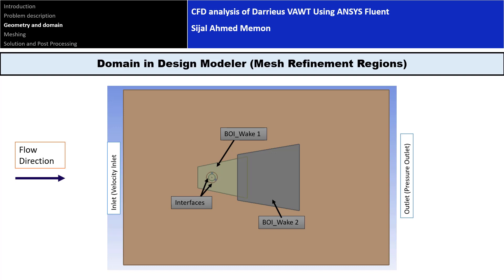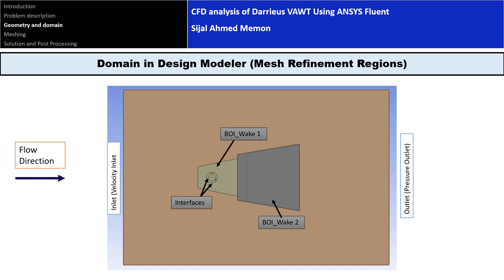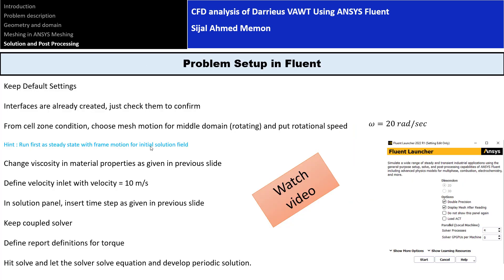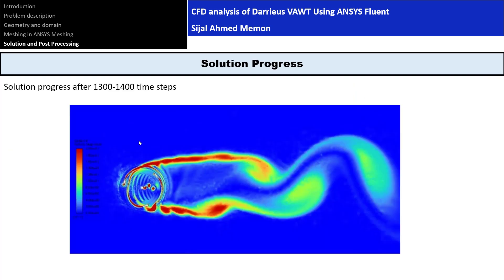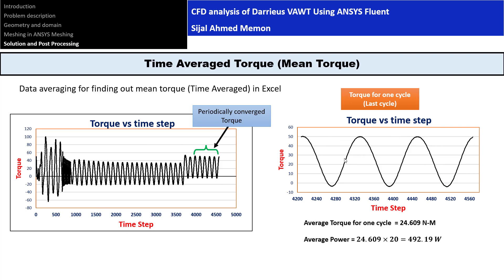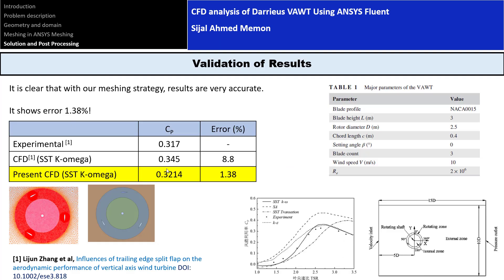The wake region determines many flow properties. You can see the mesh with the wake region at different locations. In the 2D case we have around 30 to 40 inflation layers. After applying the settings, we obtained the solution for torque versus time step. Averaging the last cycle over 60 time steps per cycle, we compared the data, and the error is less than 1.38%.